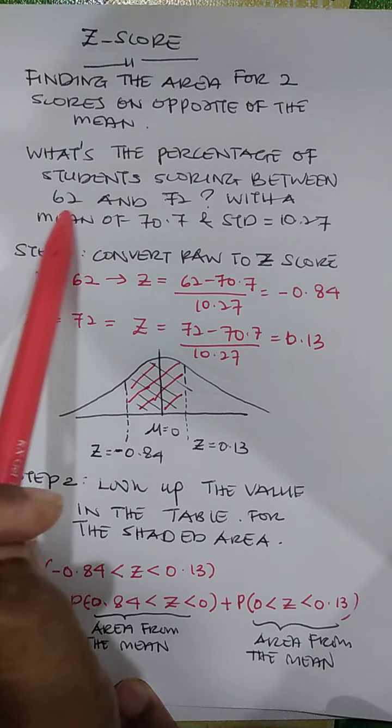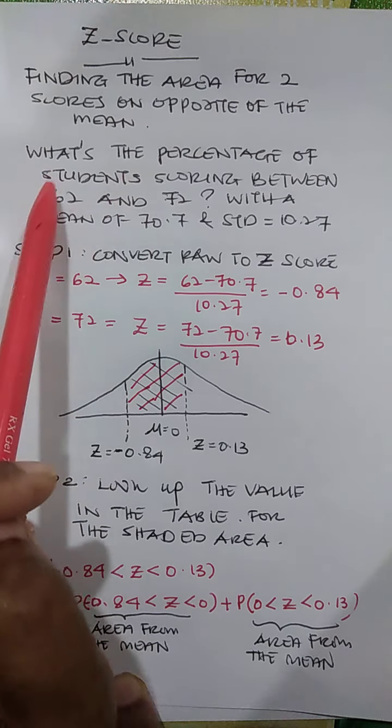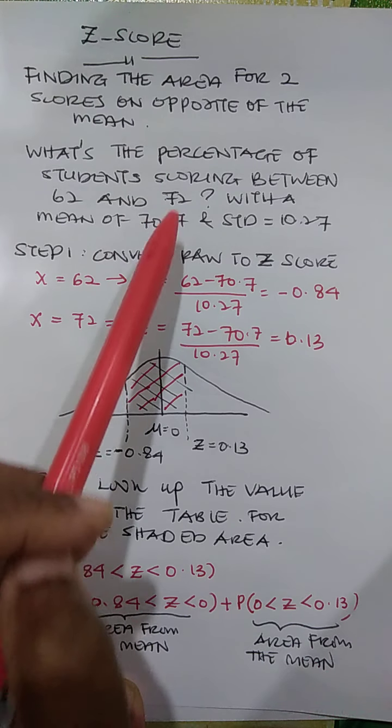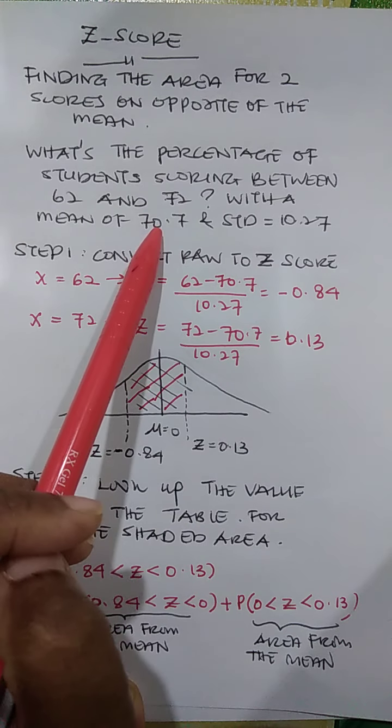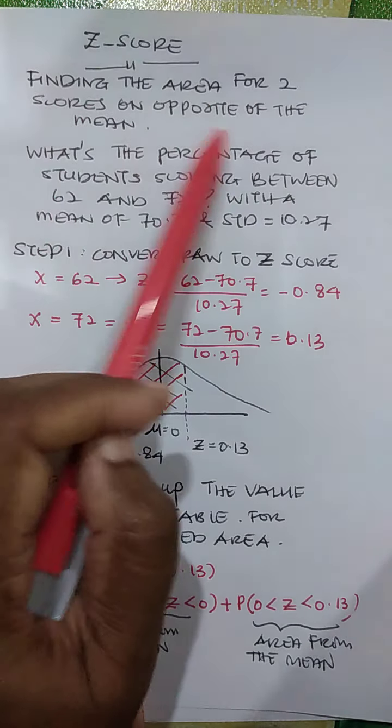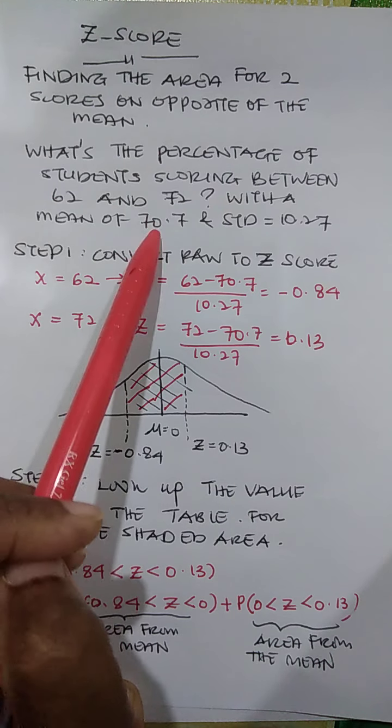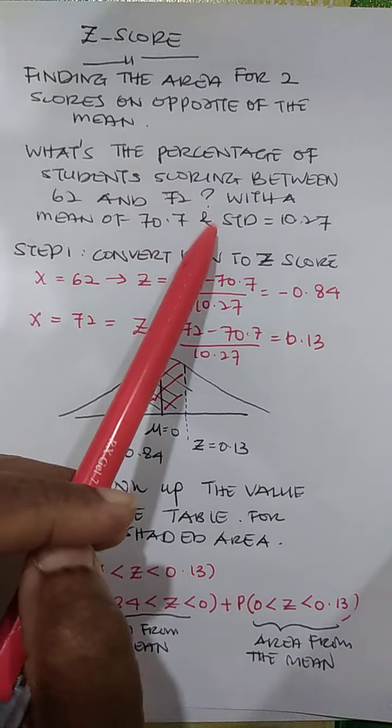Mean is 70.7 and we are asking the score between 62 and 72. So 62 is below the mean, 72 is above the mean. So that is what we mean by finding the area for two scores opposite of the mean. Mean is 70.7, there is one score below, one score above.